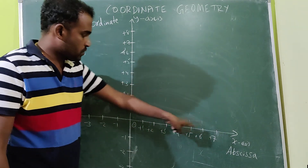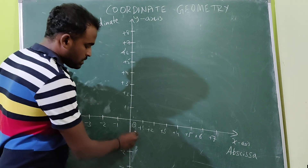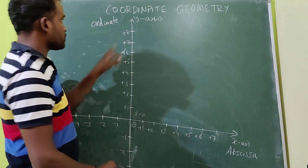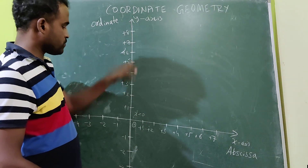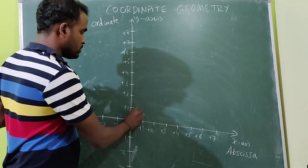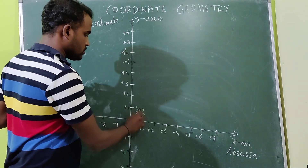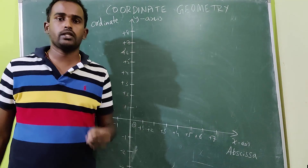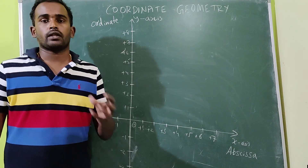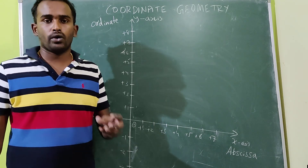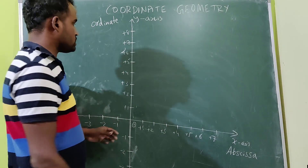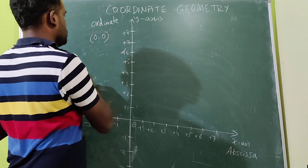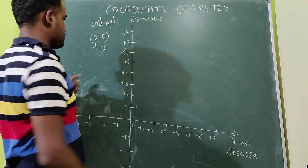If you come across this particular x-axis, the x value is 0. If you come across the y-axis also, the y value is 0. Therefore, the coordinate of the origin: origin means always it is (0, 0) — x equals 0, y equals 0.